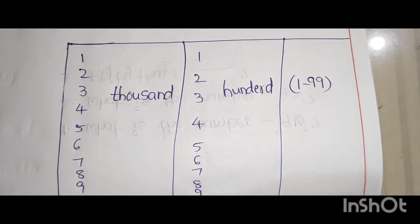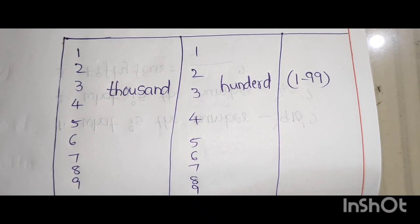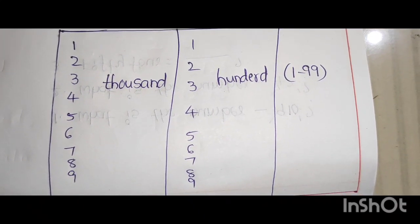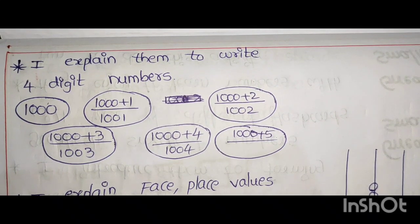They write 1 to 99 easily. And I explain 1000, 100 spellings and using chart. This is the word form chart.